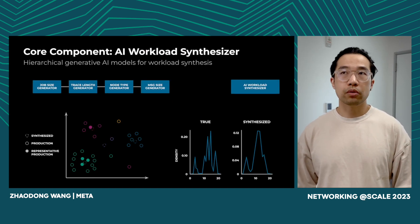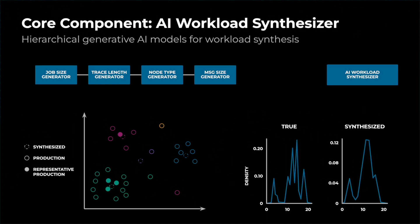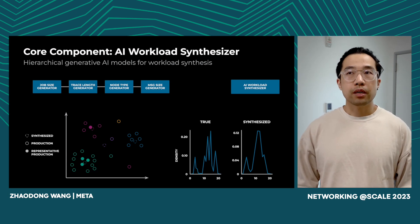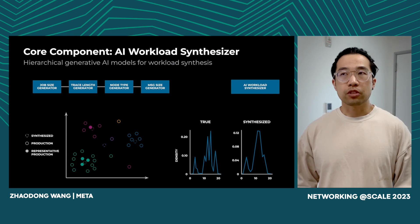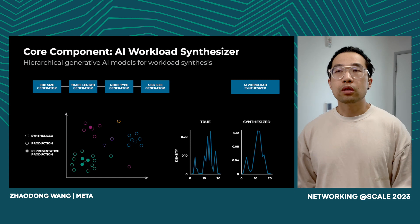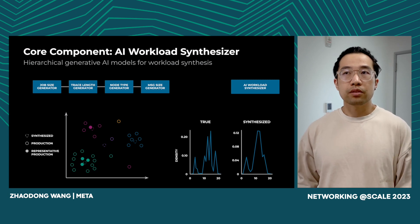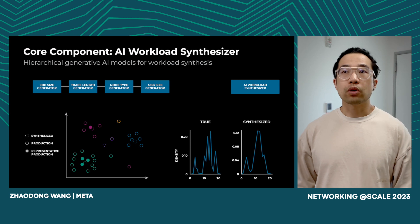Now moving to the next core component, which is the AI workload synthesizer, and this serves as the input of our simulator. To improve the fidelity of our simulation results, we calibrate all of our AI workloads using a data-driven approach, where we collect the production workload traces, extracting key features such as trace length, graph structure, job sizes, compute memory, collective nodes, dependencies, message sizes, and tensor sizes. We learn from our production data using unsupervised learning, such as clustering algorithms or generative AI algorithms, to learn the underlying latent distribution and then pick representative traces from those distributions, such that the synthesized workload can best represent all different kinds of workloads in the entire training cluster.